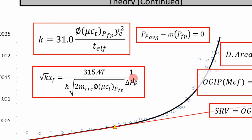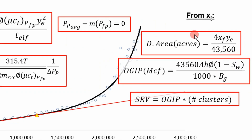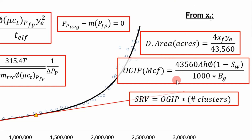And then once you have those values, after you get fracture half length, you can essentially get drainage area, original gas in place, and the stimulated reservoir volume. It's important when doing this analysis to realize that you need some data from the field — you need your cluster spacing or your distance of investigation. That's what you're going to need for drainage area, original gas in place, and SRV to be reasonable. If you don't have those values, you can't really calculate this.